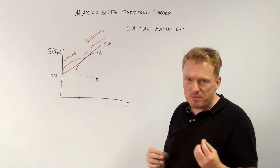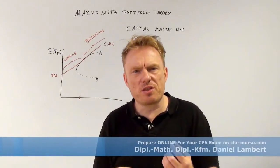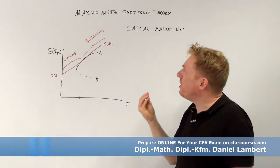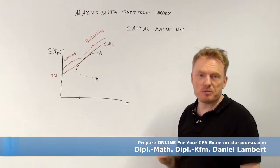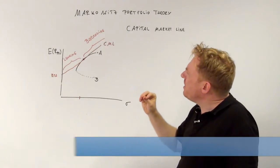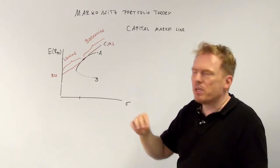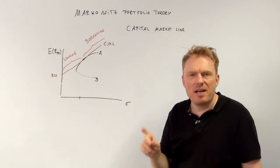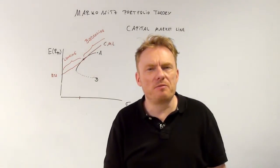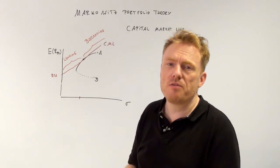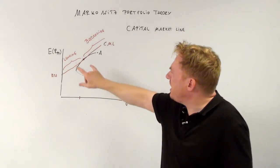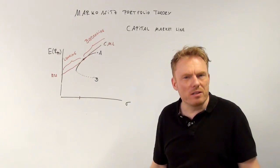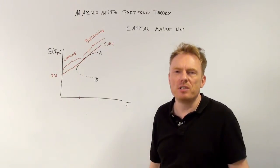This means we have a separation theory, which is very essential to Markowitz portfolio theory. First, we compute the market portfolio, and then, dependent on the utility function of the investor, the investor either decides on lending or on borrowing, depending on his utility function.